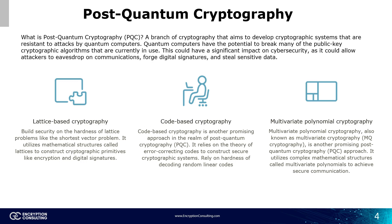Lattice-based cryptography builds security on the difficulty of lattice problems like the shortest vector problem. It uses mathematical structures called lattices to construct cryptographic primitives like encryption and digital signatures. Code-based cryptography is another promising approach in the realm of post-quantum cryptography. It relies on the theory of error-correcting codes to construct secure cryptographic systems, specifically on the difficulty of decoding random linear codes. Multivariate polynomial cryptography, also known as MQ cryptography, uses complex mathematical structures called multivariate polynomials to achieve secure communication.